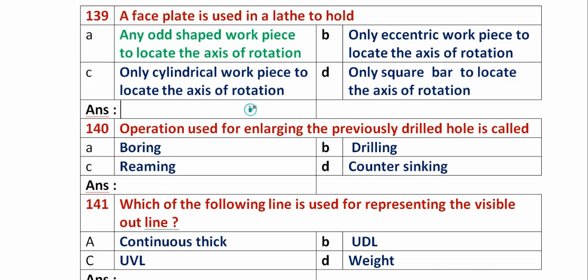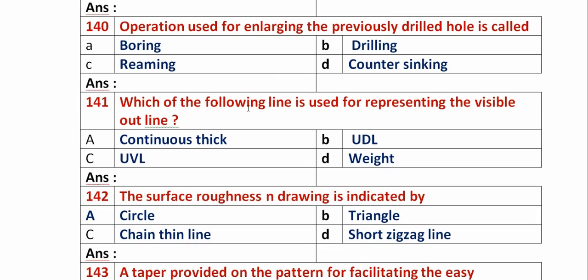Question 140: The operation used for enlarging a previously drilled hole is called? Option A: boring. Option B: drilling. Option C: reaming. Option D: countersinking. Boring is the process of enlarging a previously drilled hole. So option A, boring, is the right answer.